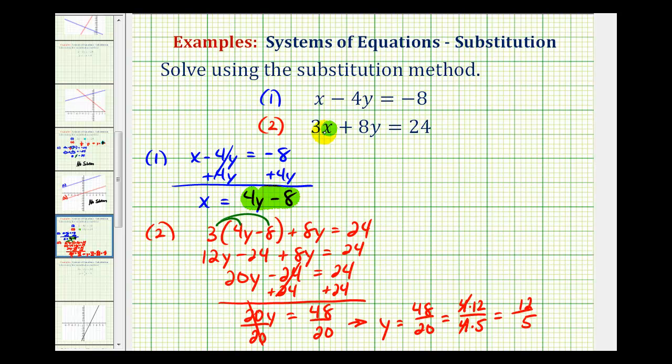Now remember, the solution consists of an ordered pair, or an x and y value. So now we know that y is going to be twelve-fifths.